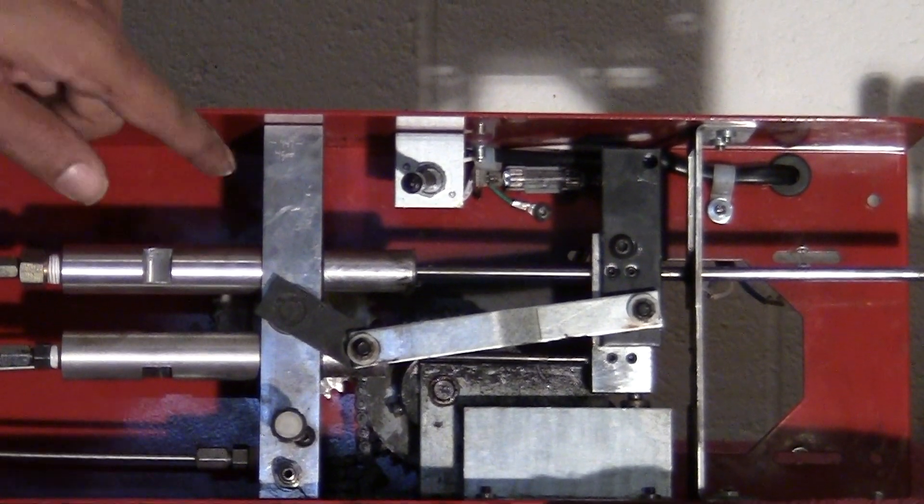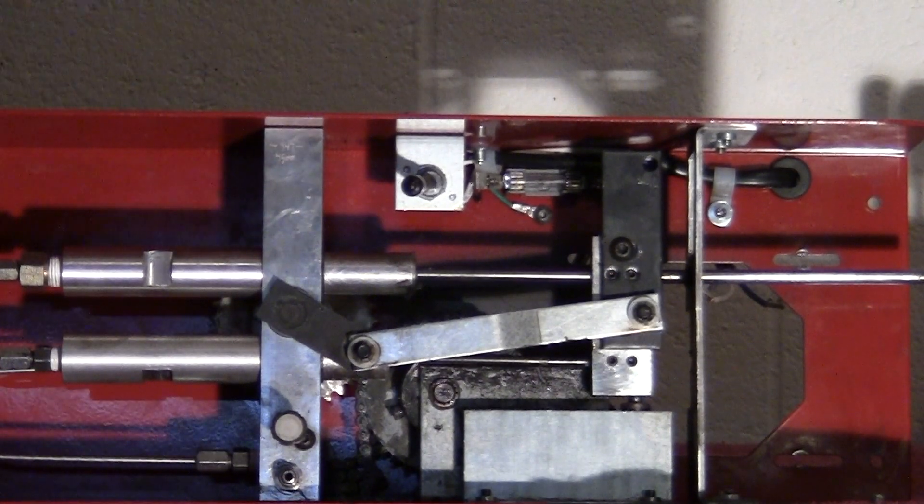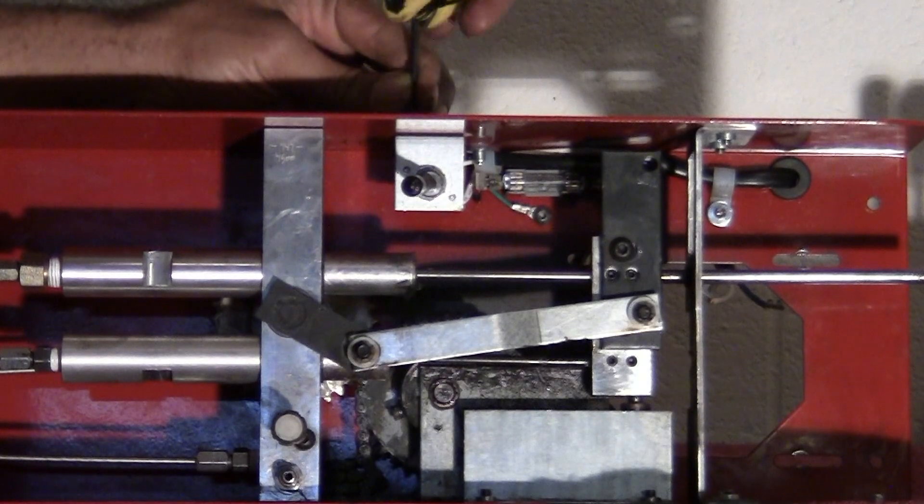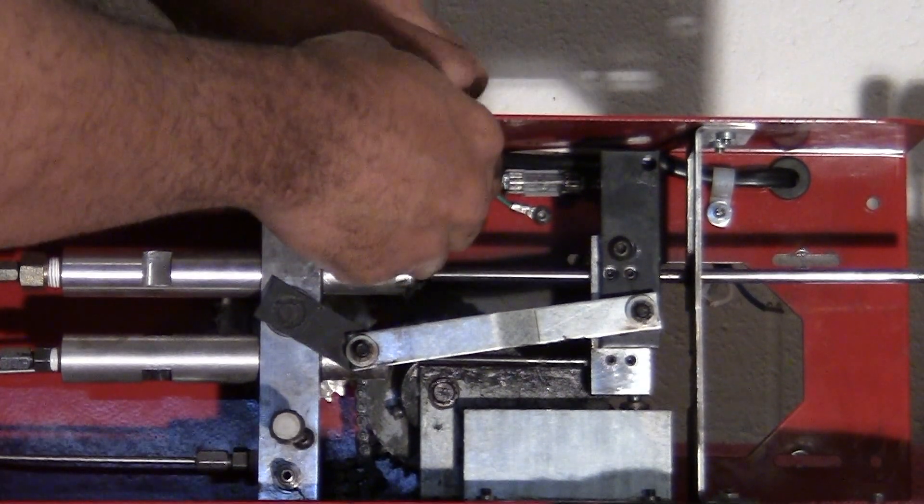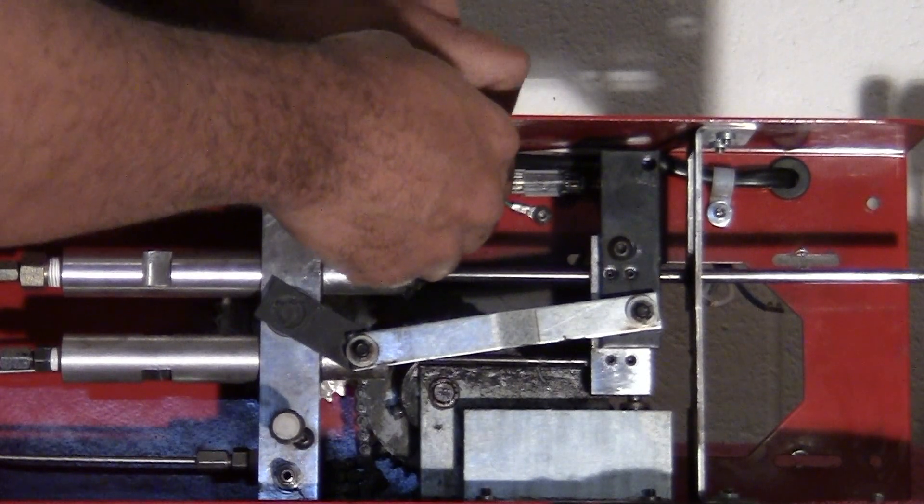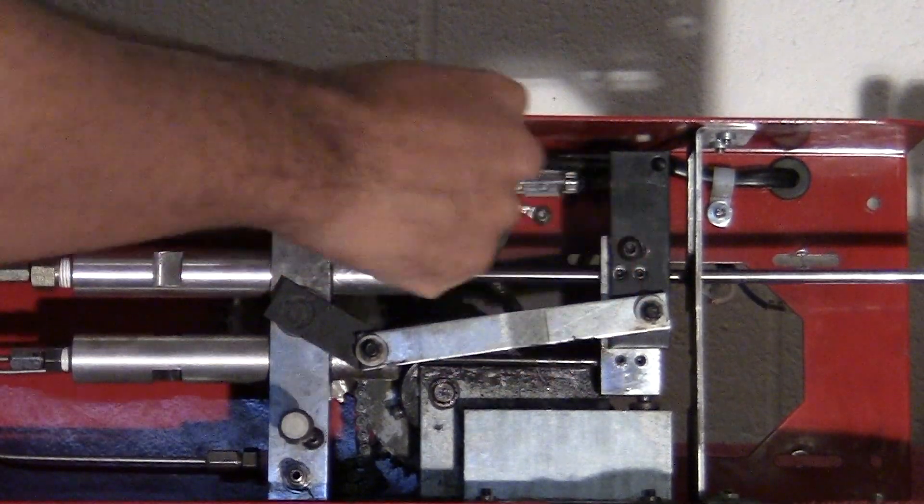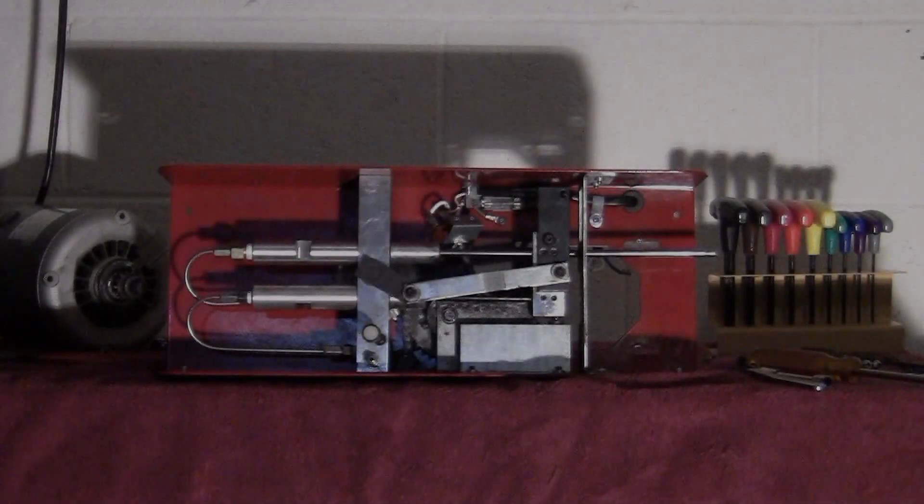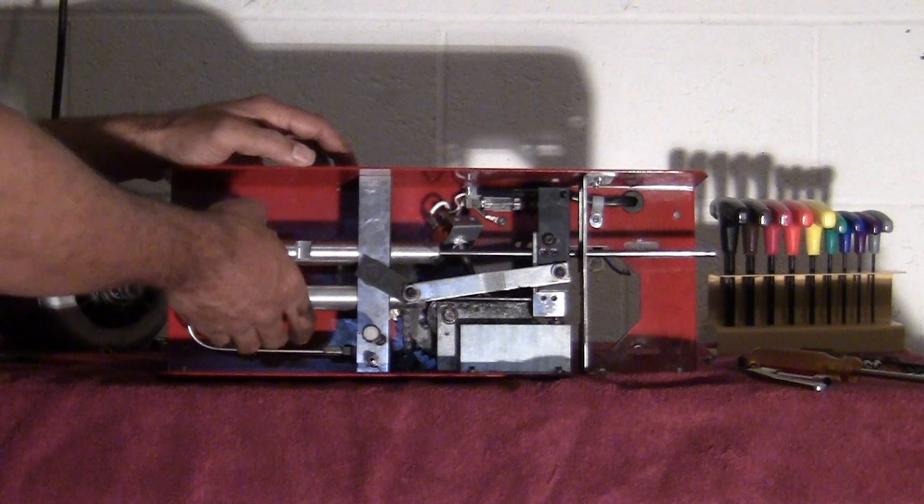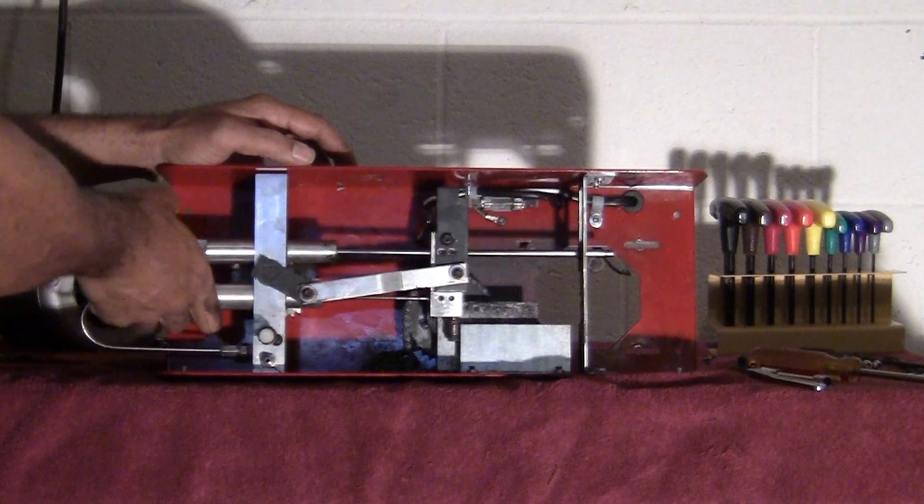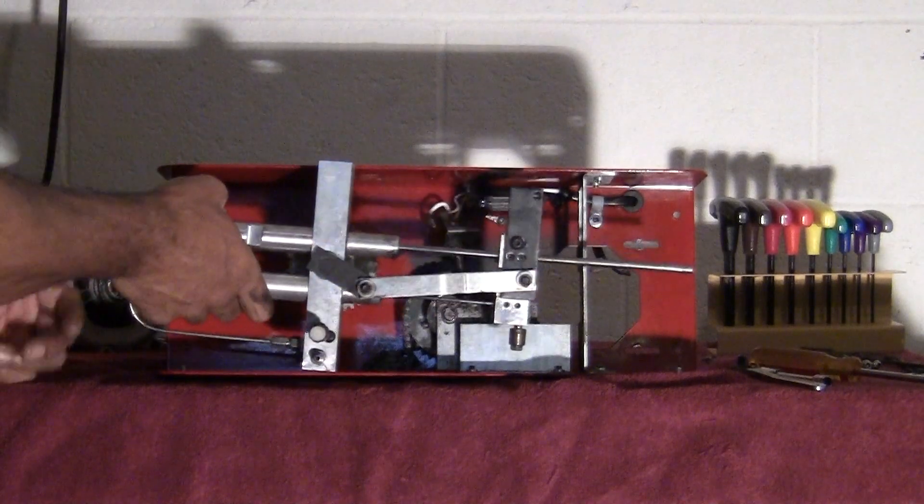Alright, before we pull the block out let's go ahead and remove the switch. Two screws on top. Alright, now that we've removed the screws from the cylinder block top and bottom, let's go ahead and slide it out. And there you go.